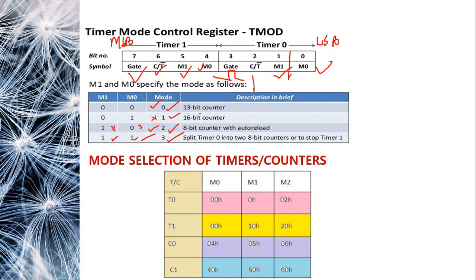The mode bits M1 and M0 determine the operating mode: M1=0, M0=0 is Mode 0 (13-bit timer/counter); M1=0, M0=1 is Mode 1 (16-bit timer/counter); M1=1, M0=0 is Mode 2 (8-bit auto-reload); M1=1, M0=1 is Mode 3 (split timer mode).